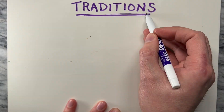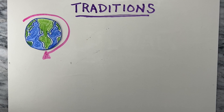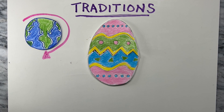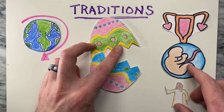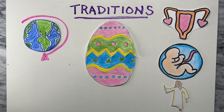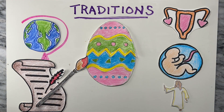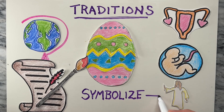Today, Easter is celebrated around the world with many traditions. One of the most popular traditions is the Easter egg. The egg has long been a symbol of fertility and new life, and in many cultures it is believed to represent the resurrection of Jesus. The practice of decorating eggs dates back to ancient times, but it is the Christians who first used eggs to symbolize the resurrection.